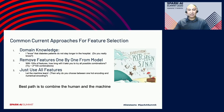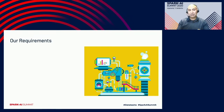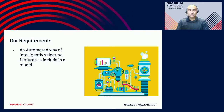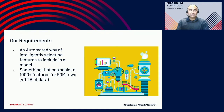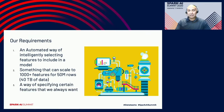The ideal approach combines human and machine together — this is what we call AI-assisted feature selection. When we thought about the requirements, we said: first, it had to be automated and intelligently select features, not random selection. Second, it had to scale — handling thousands of features and at least 50 million rows and 40 terabytes of data. And third, we wanted the ability to preserve certain features we always want, since customers might want to see age even if it's not the best feature for the model.